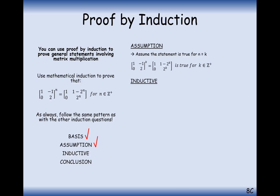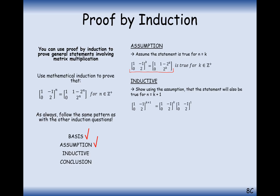Now let's go ahead and prove this for the k+1 case. We start with our matrix to the power of k+1, and we want to use the assumption step in our inductive step. So we split this index up into a power of k on the matrix and a power of 1 on the matrix. Given that we know the theorem applies, we can replace the k-powered matrix with the right-hand side of our assumption.